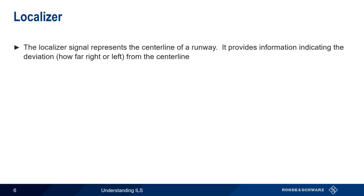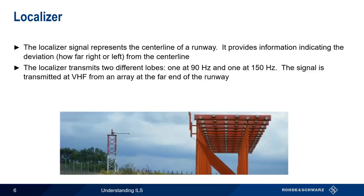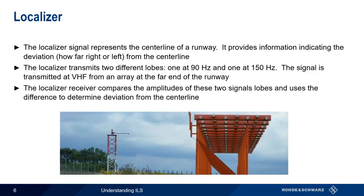Recall that the localizer signal represents the centerline of the runway and provides horizontal guidance. In other words, how far to the left or right of the runway centerline we are. The localizer conveys this information by simultaneously transmitting two different lobes, one at 90 Hz, the other at 150 Hz. These patterns are generated by the localizer antenna array located at the far end of the runway. In the aircraft, the localizer compares these two signals and uses the difference to compute the deviation from the centerline of the runway.